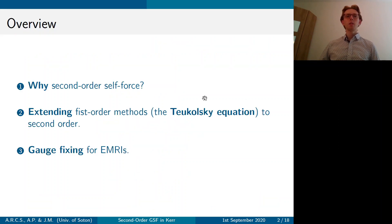So a quick overview of what I'm going to talk about. I'm going to discuss why we need second-order self-force and then I'm going to explain how we can extend first-order methods in Kerr, so the Teukolsky equation, to second order. Then I'm going to discuss gauge invariance in second-order and why you need gauge fixing and also what gauges you want to fix to for EMRIs.